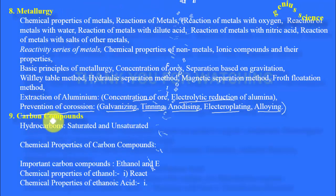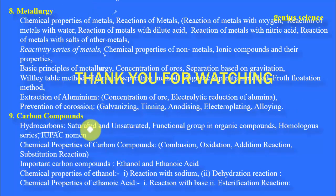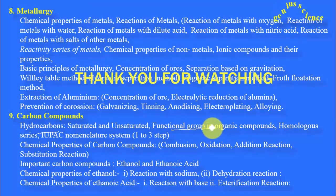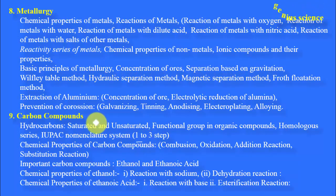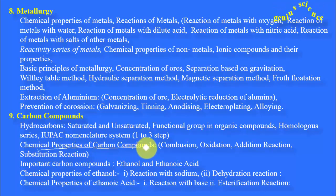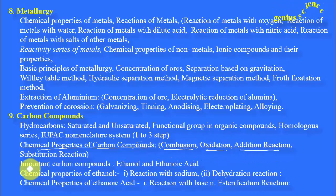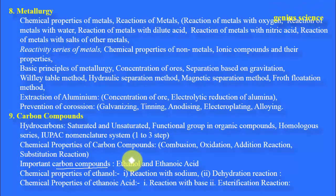The next chapter is Carbon Compounds. Topics include hydrocarbons, saturated and unsaturated hydrocarbons, functional groups in organic compounds, homologous series, and IUPAC nomenclature system — International Union of Pure and Applied Chemistry. There are three steps of IUPAC nomenclature we must learn and remember. Then chemical properties of carbon compounds: combustion, oxidation, addition reaction, substitution reaction. Also important carbon compounds: ethanol and ethanoic acid.